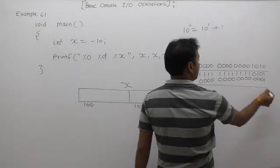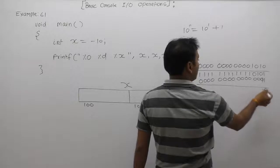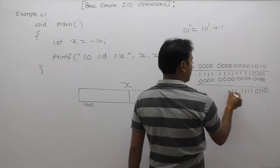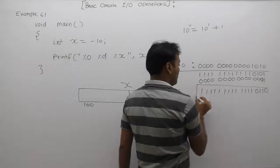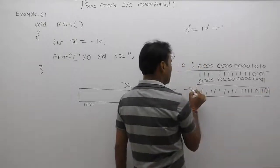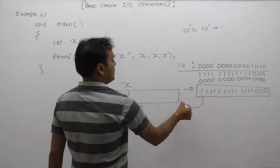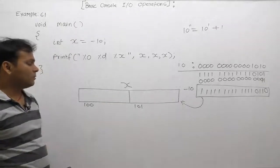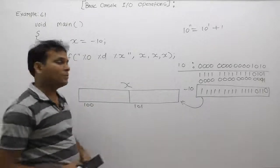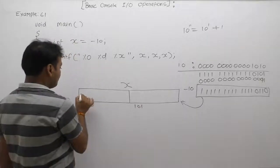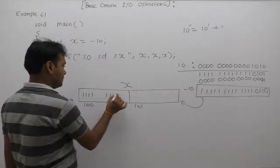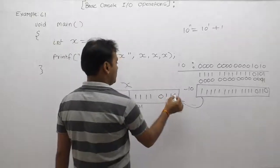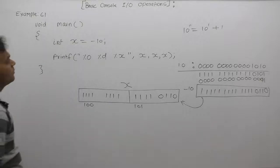Performing the binary addition: 1 plus 1 is 0 carry 1, 0 plus 1 is 1, 1 plus 0 is 1, and the remaining bits are all 1s. This is the two's complement of plus 10, which is equivalent to the binary number of minus 10. The binary value assigned inside variable x is: 1111111111110110.